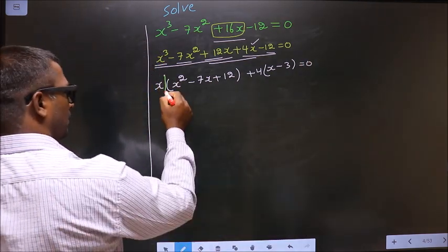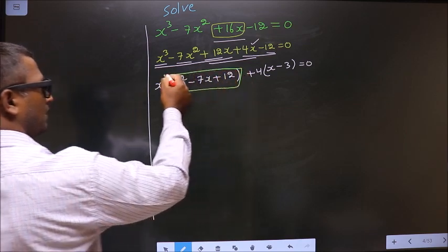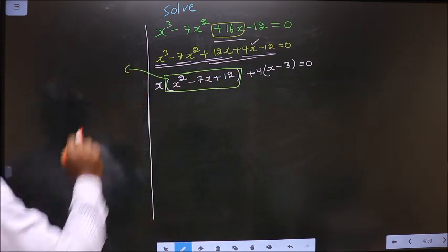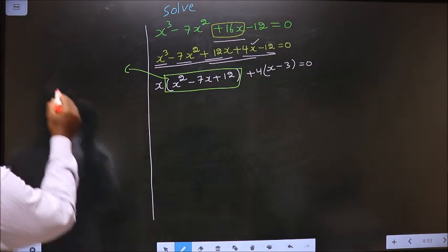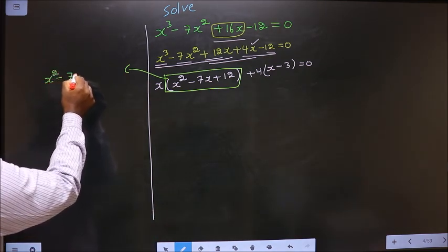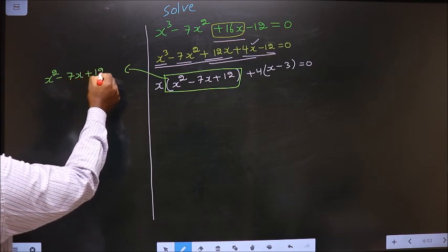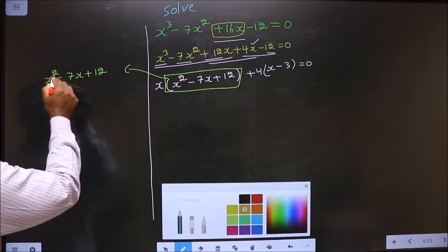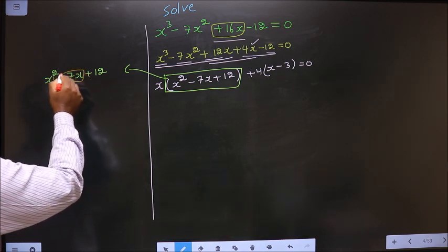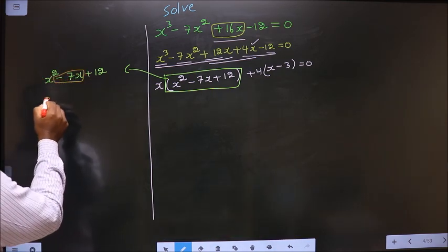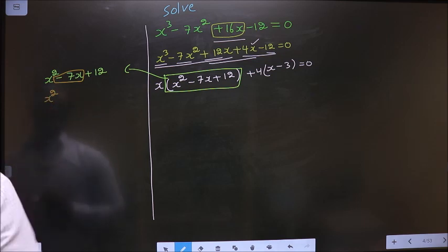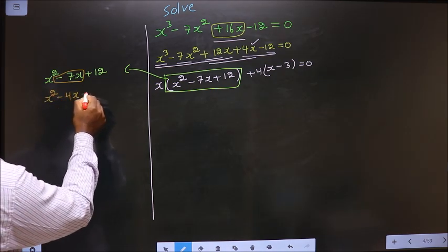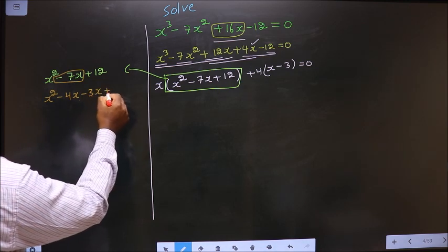Now here I got a quadratic, so I will factorize this quadratic equation. That is x squared minus 7x plus 12. To factorize this, I should change minus 7x — I should write it as minus 4x minus 3x plus 12.